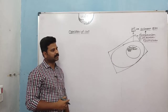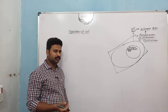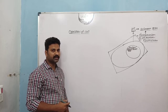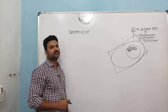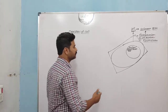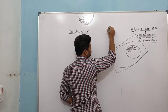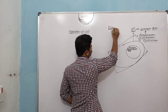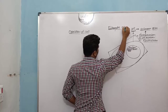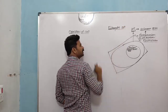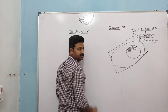Basically we have two types of cells. One type does not have a membrane-bound nucleus, and the other type does. Eukaryotic cells have a membrane-bound nucleus.